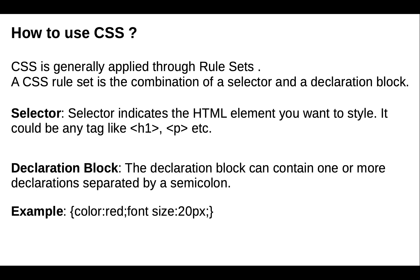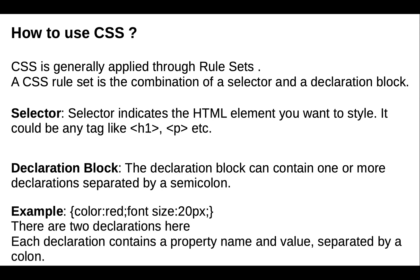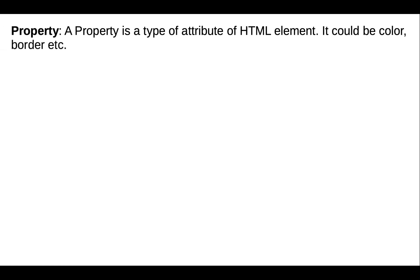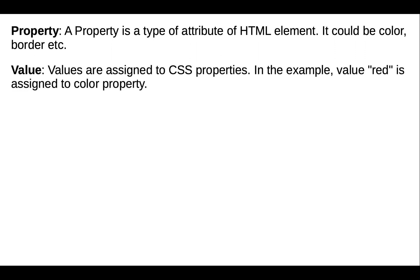Here color is a property and red is a value. A declaration contains a property name and value separated by a colon. A property is a type of attribute of an HTML element — it could be color, border, text, line, etc. Values are assigned to CSS properties.